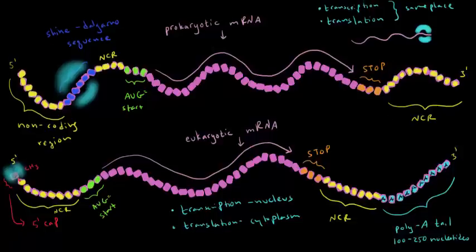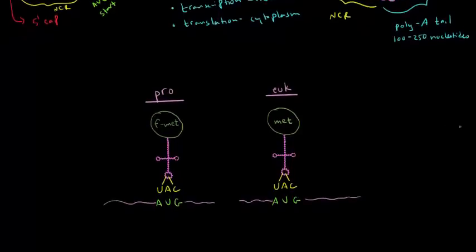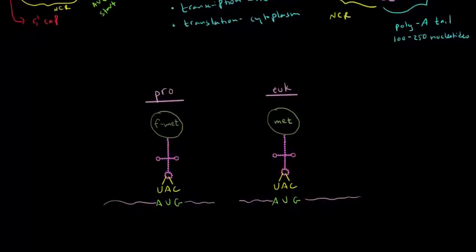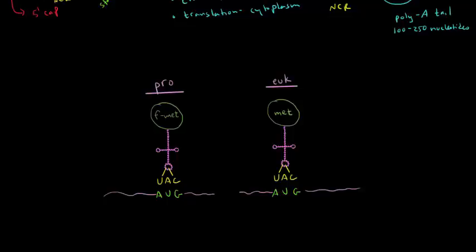There's one more difference I want to talk about in how translation happens in prokaryotes and eukaryotes. And that is what the first amino acid in the polypeptide chain will be. So in prokaryotic cells, the first amino acid in the chain is always formyl methionine. And formyl methionine is simply the amino acid methionine, but with a formyl group attached. And in case you don't remember what a formyl group looks like, it looks like that. In eukaryotic cells, the first amino acid in all the polypeptide chains is simply methionine.